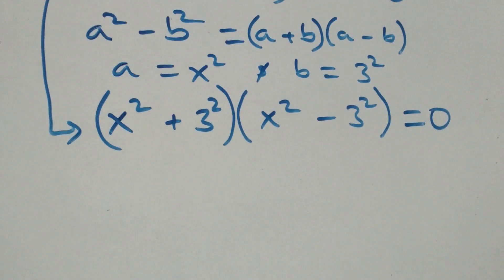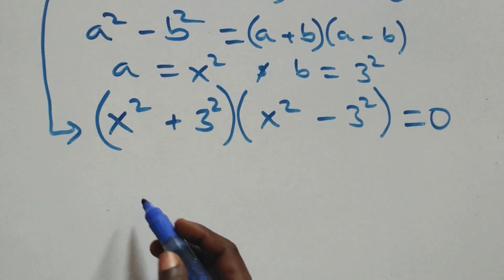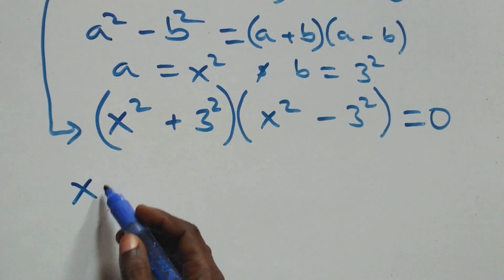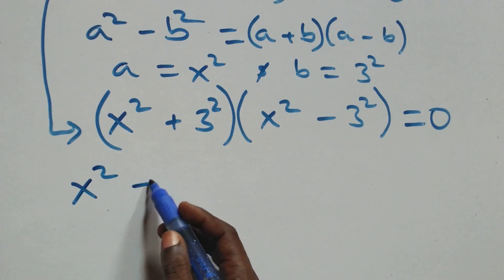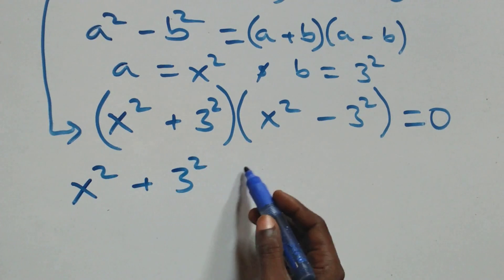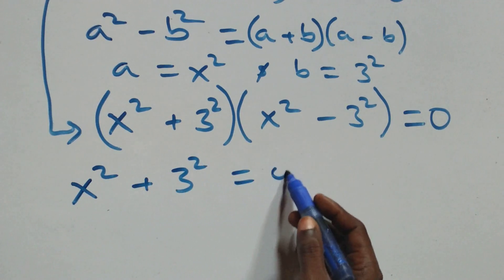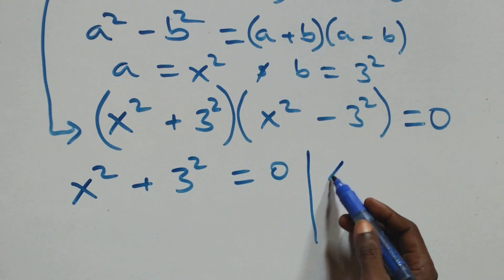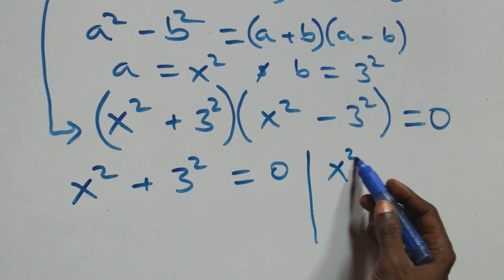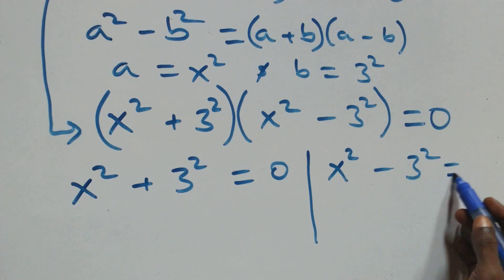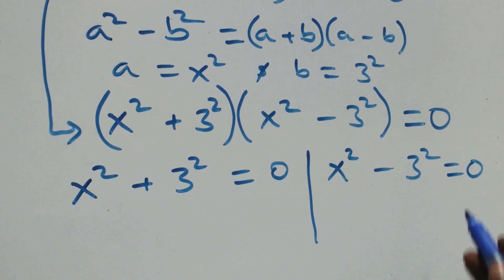We now have two possible cases. The first one: x squared plus three squared equals zero. Or we have x squared minus three squared equals zero.